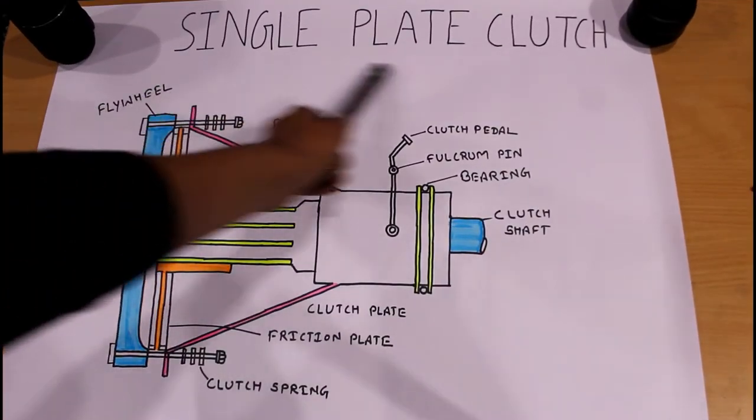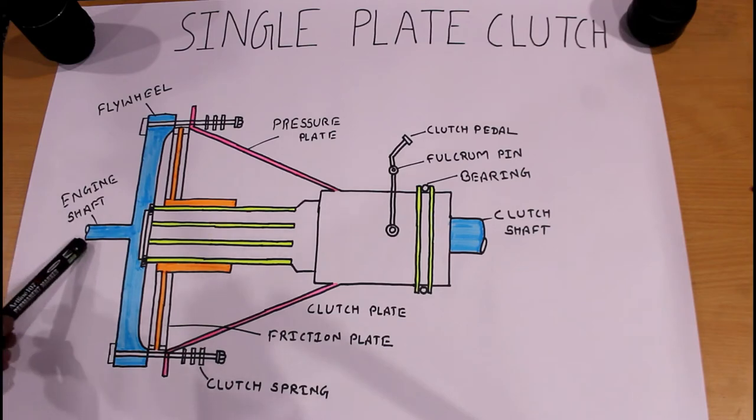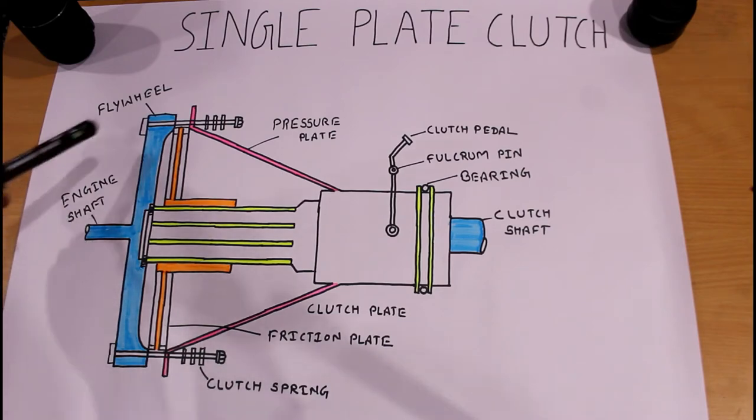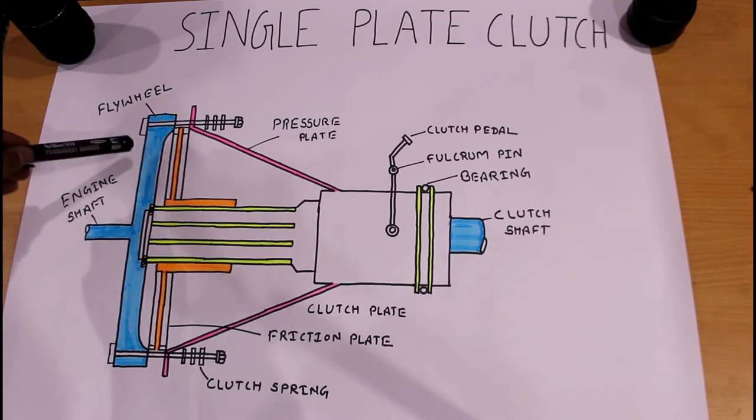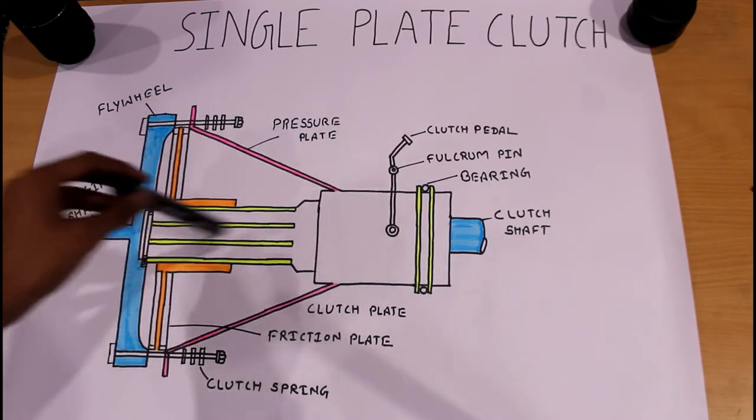So our today's topic is single plate clutch. You can have a look here. This one is an engine shaft which is a crankshaft connected through the engine flywheel, and after this flywheel the single plate clutch assembly is present.